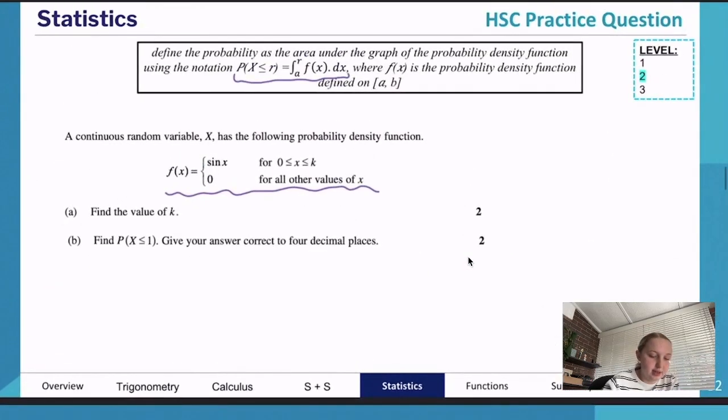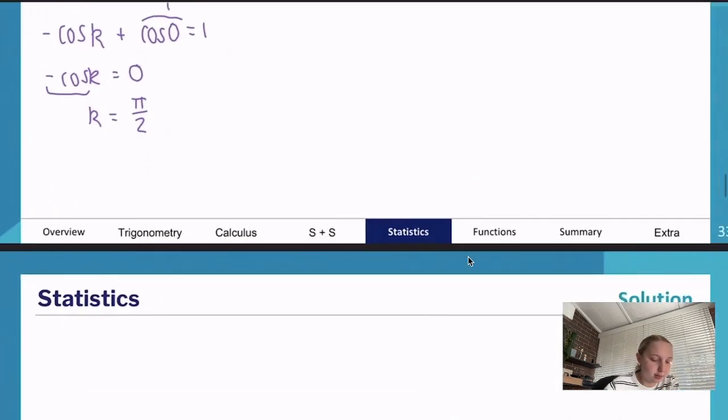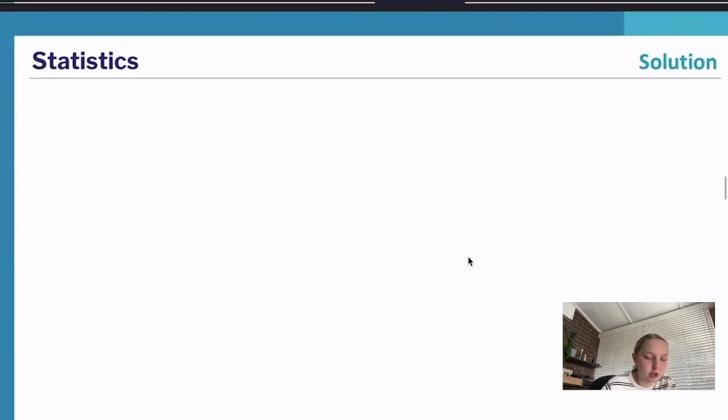Pretty simple, worth two marks, super easy marks to get. Then we want to find the probability that one is greater than or equal to x, giving your answer to four decimal places. This is our indicator we don't want the exact value, don't care about the exact value for this one. Again, pretty simple question, just knowing what to do is the hard part.